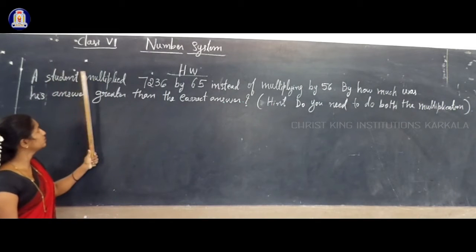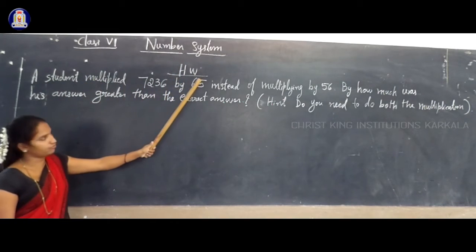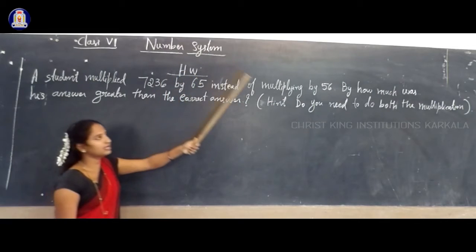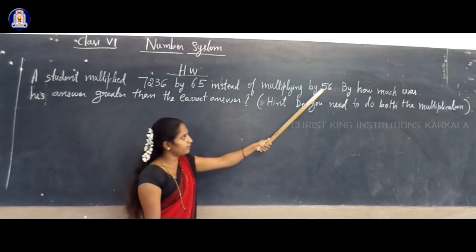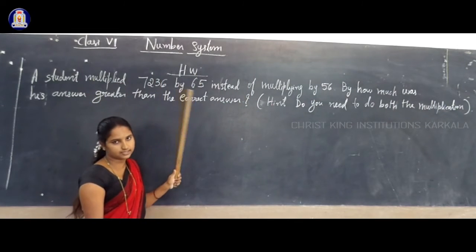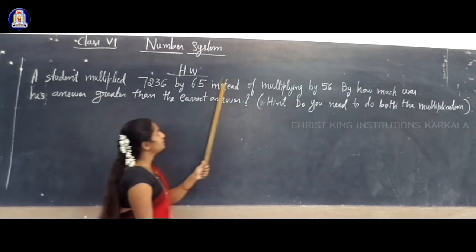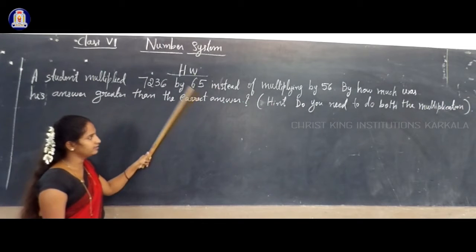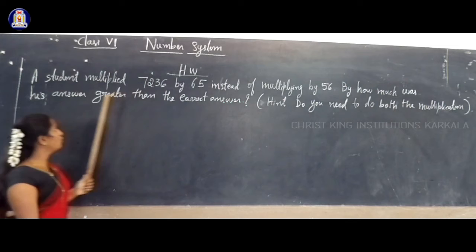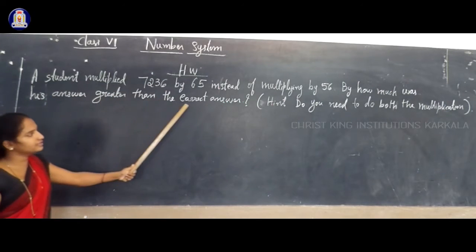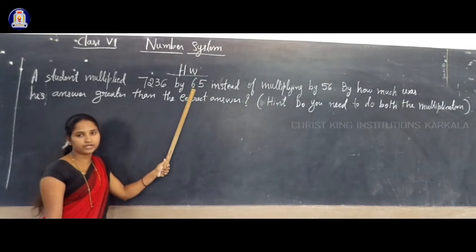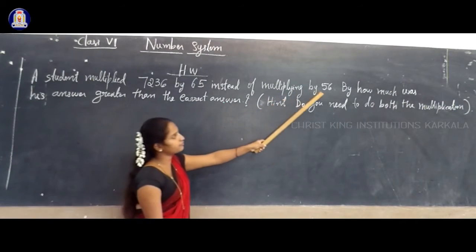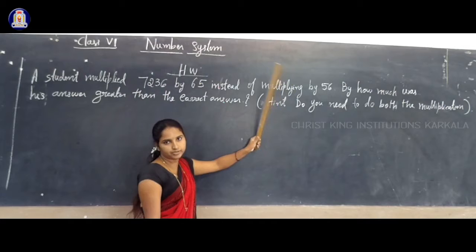Let's look at the question again. A student multiplied 7236 by 65. He multiplied 7236 by 65 instead of multiplying by 56. If he multiplied by 56, he would get the correct answer. But instead of multiplying by 56, he multiplied by 65. Then he will get a different answer. That answer and the answer after multiplying by 56 — you have to compare.